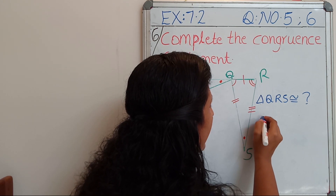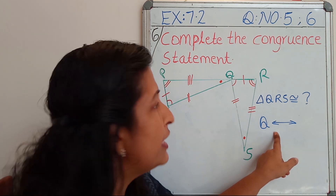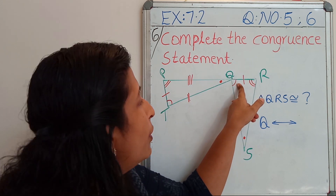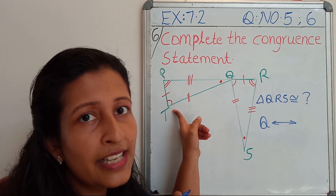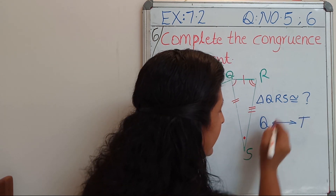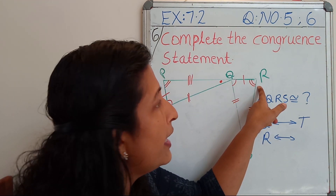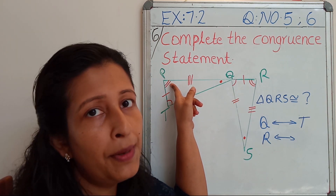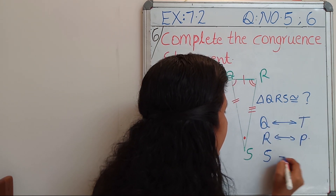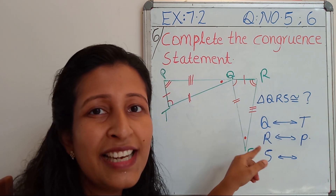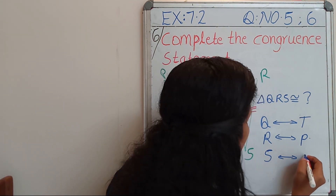So angle Q is corresponding to — Q is marked by a single line. In the other triangle, angle T is also a single line, so Q is corresponding to T. Then R: R is marked by a double line, and P is also marked by a double line, so R is corresponding to P. Then S: S is corresponding to Q.